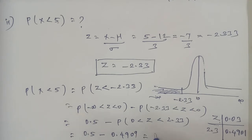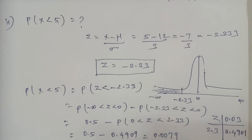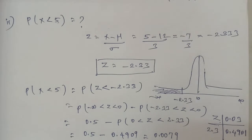Therefore, P(X < 5) = 0.5 − 0.4901 = 0.0079. The number of drive battery cells is 125.